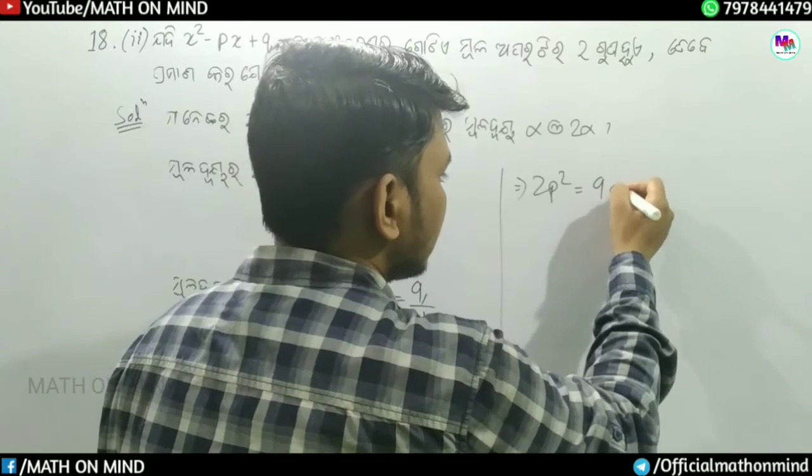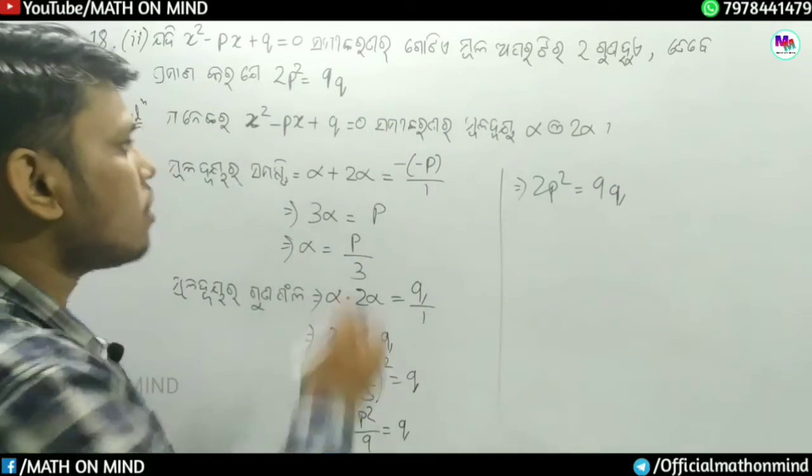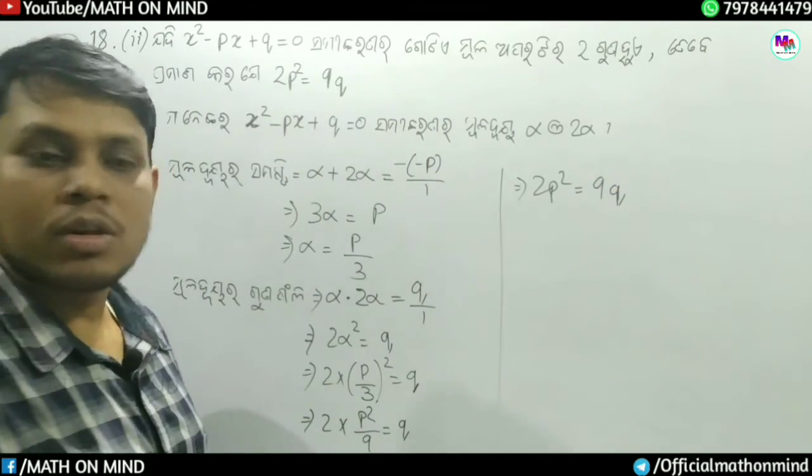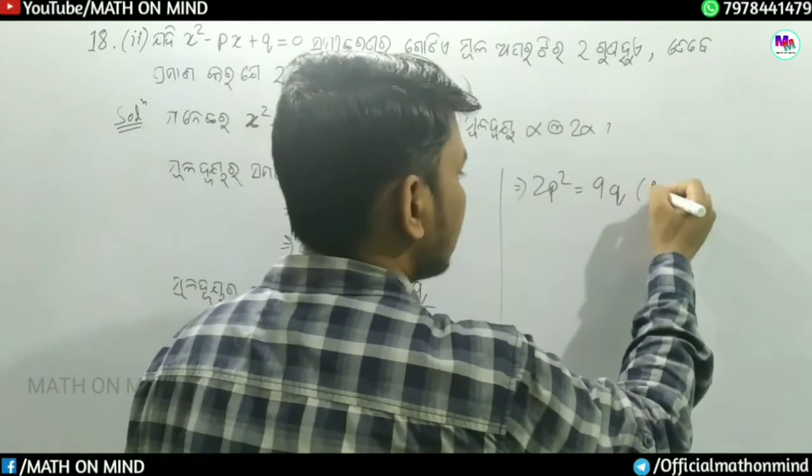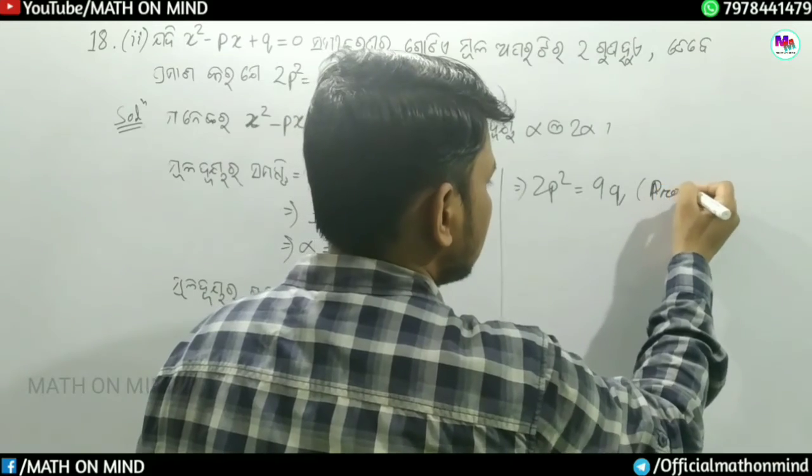Therefore 2 p square divided by 9 equals q, which means 2 p square is equal to 9q. That's proved.